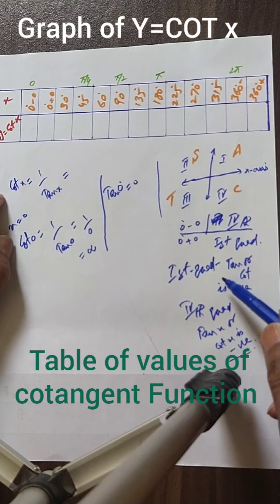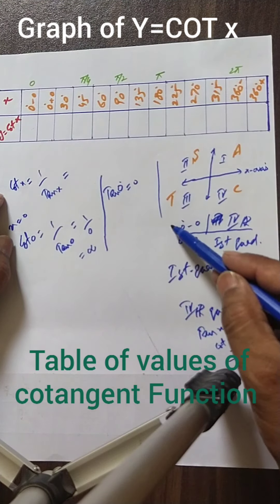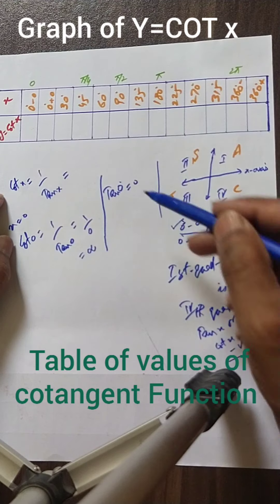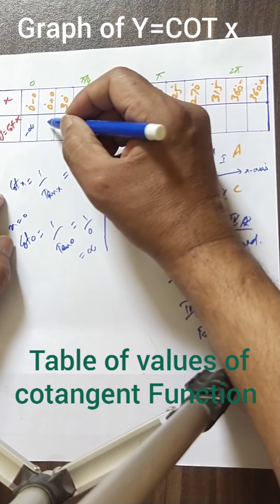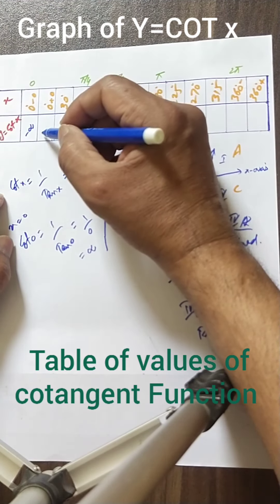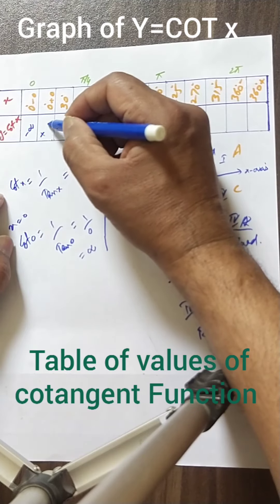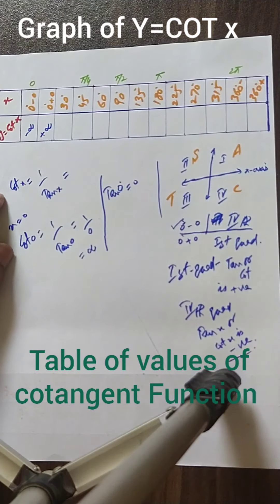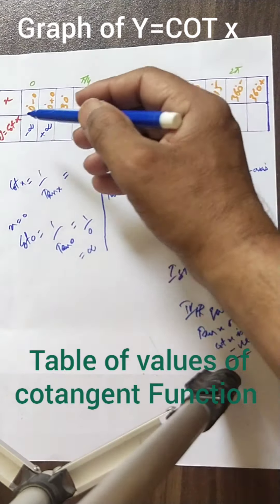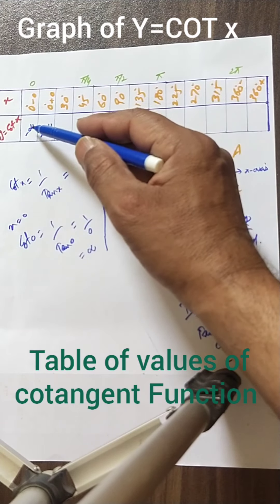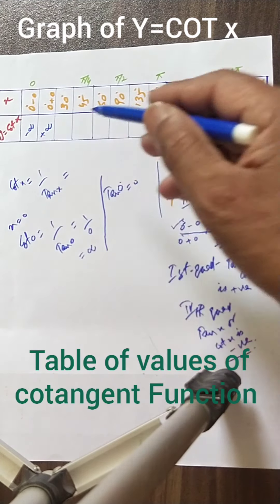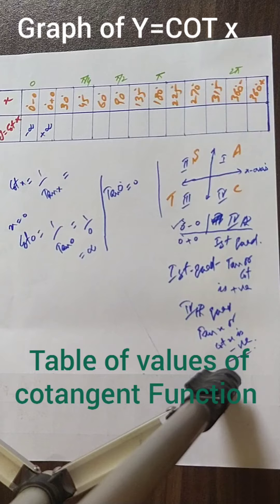At 0 minus 0, which is the fourth quadrant side, cot will be minus infinite. And at 0 plus 0, which is the first quadrant side, it will be plus infinite. Please try to remember these two values: 0 minus 0 gives minus infinite, and 0 plus 0 gives plus infinite.